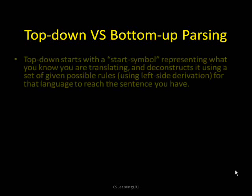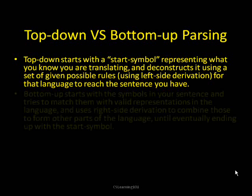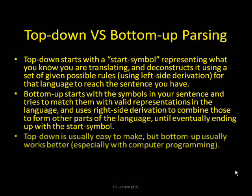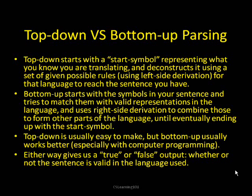Top-down parsing starts with a start symbol that represents what you know you are trying to translate, and it deconstructs it using a set of given possible rules, using left-side derivation, to reach the sentence that you have. Bottom-up starts with the symbols in your sentence and tries to match them with valid representations in the language, using right-side derivation to combine those to form other parts of the language, until eventually ending up with the start symbol. Top-down parsing is usually easier for us to do, but bottom-up works better — especially with computer programming. Either way, you will get a true or false statement at the end, indicating whether the sentence could be made using the grammar you've defined.